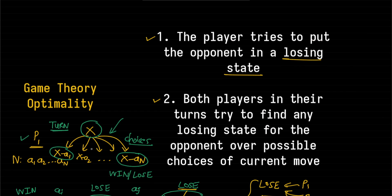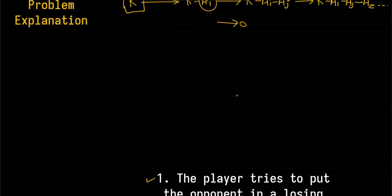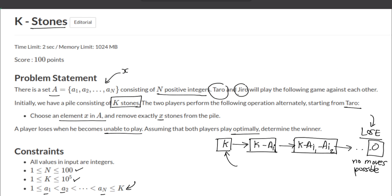That's it about the solution. The main idea is these two points: the player tries to put the opponent in a losing state, and each player in their turn tries to find any one losing state for the opponent over all possible choices at that particular state. If you found this helpful, let me know in the comments, and drop any doubts or suggestions there too. Thank you.